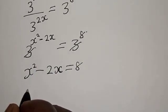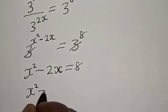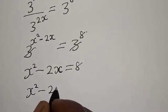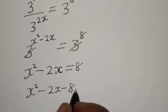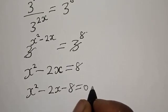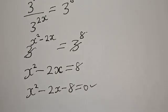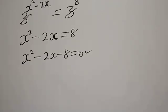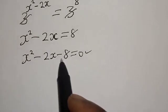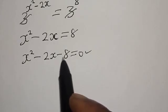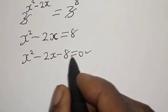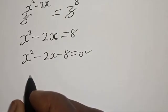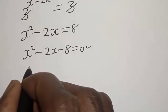Since they have the same base, we cancel the bases and get: s squared minus 2s is equal to 8. Then we have s squared minus 2s minus 8 is equal to zero. This is a quadratic equation and can be solved using either the factorization method or the quadratic formula, but I'm going to use the factorization method.